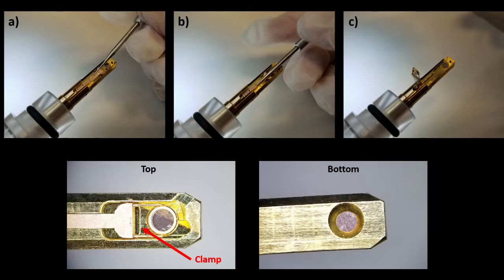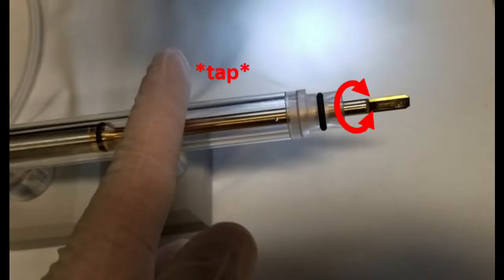The images in the lower portion of this figure show a correctly loaded TEM grid under the microscope. Once the sample is in the clamp, you want to rotate the holder, tapping very gently to ensure that the TEM grid is secure. The last thing we want is for your sample to fall into the column.